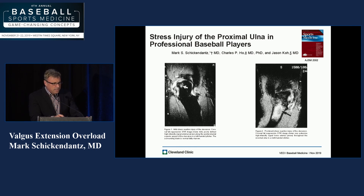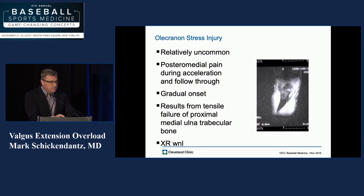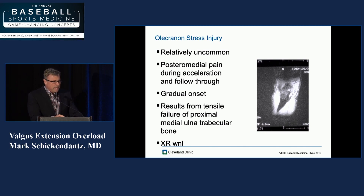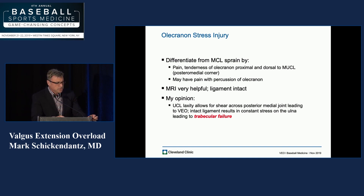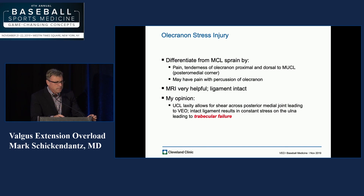Moving on to some of the more bony problems we see — in the back of the olecranon, we described stress injury to the proximal ulna about 17 years ago. This is relatively uncommon. It's tensile failure of the proximal medial ulnar trabecular bone without bicortical fracture, and this is seen on MRI. We differentiate this from an MCL sprain based on physical exam. They have pain and tenderness of the olecranon, proximal and dorsal to the ulnar collateral ligament. The MRI is very helpful, and we see that the ligament is intact. UCL laxity allows for shear across the posterior medial joint leading to valgus extension overload, and in the face of an intact ligament, constant stress on the ulna can lead to trabecular failure.